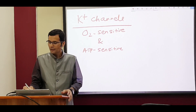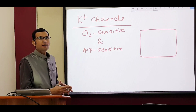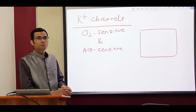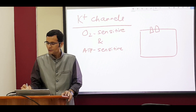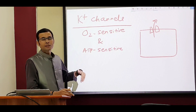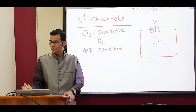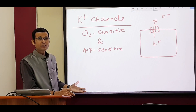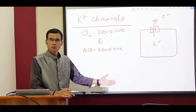Any potassium channel present in any plasma membrane, or even in the membrane of organelles, generally allows potassium to predominantly leak out, because potassium concentration is higher on the inside and lower on the outside in the ECF. Therefore, by concentration gradient, potassium is expected to leak out of the cell.